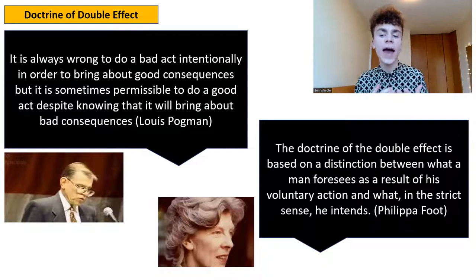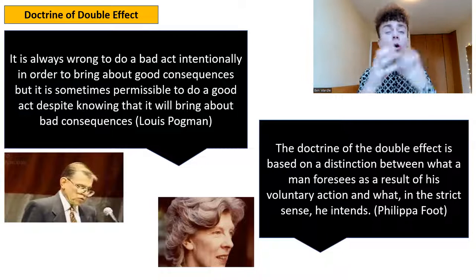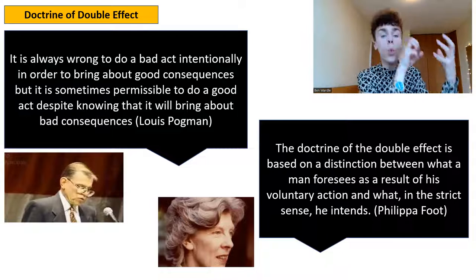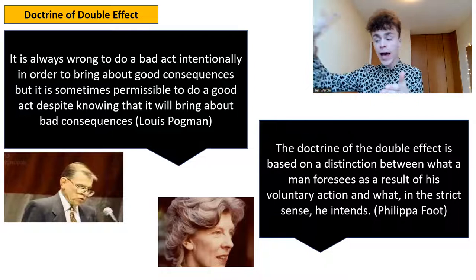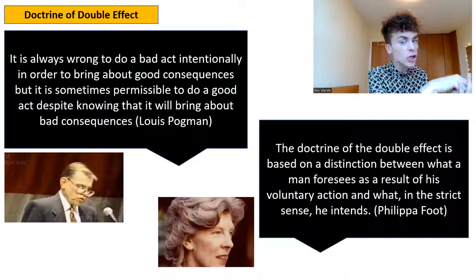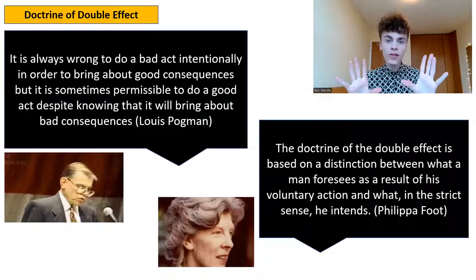Philippa Foot has a great way of summarizing this. She says: "The doctrine of the double effect is based on a distinction between what a man perceives as a result of his voluntary action and what, in the strict sense, he intends." Again, this key distinction between intention and foresight. What are you intending to do? That is what matters. That is where we make our moral judgment. If you have foresight that something bad could happen as a side effect, that is not the same as having the intention to be the cause of that badness.